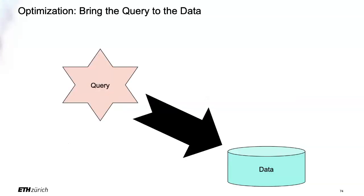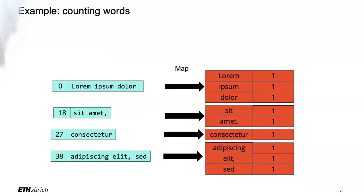There is a second optimization that's kind of for free: the idea of bringing the query to the data. If you ensure the map function is executed on the same machine where the data is stored — meaning there's a replica of the block on the same machine — then you don't need to ship it over the network for the map phase. Once you shuffle, it's over the network, but for the map phase you can be very efficient.